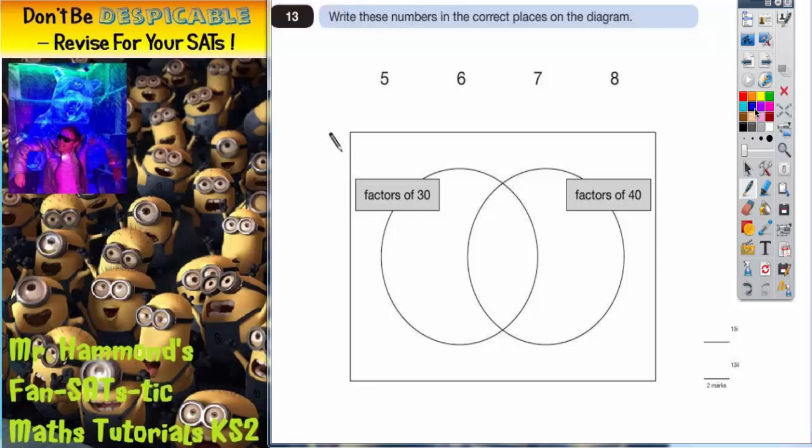So now let's think about factors. Well factors of 30 you could have 1 times 30, 2 times 15, 3 times 10, and 5 times 6.